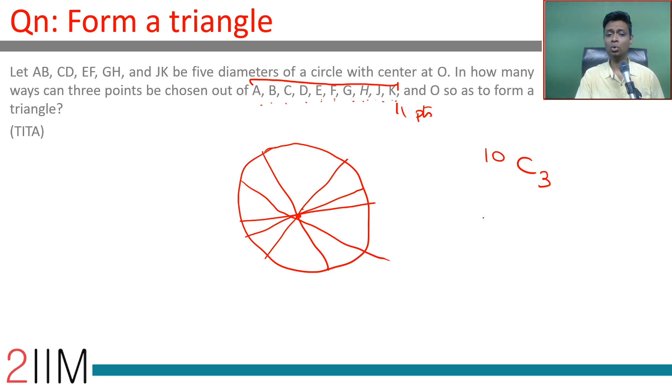Now let's think about O separately—O here at the center. Then out of the remaining 10, we can select 2. Take O and then select 2 out of the remaining 10. That will happen in 10C2 ways.